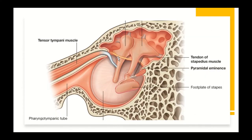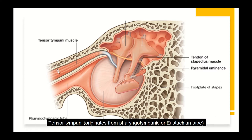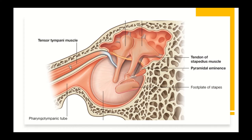Looking at the middle ear cavity from the inside, we can see the inner aspect of the tympanic membrane, the long handle of the malleus, the incus, and the stapes connecting to the inner ear. There are two muscles inside the middle ear cavity. One is the tensor tympani muscle, which originates from the eustachian tube — the connection between the middle ear cavity and the nasopharynx — and attaches to the long handle of the malleus.